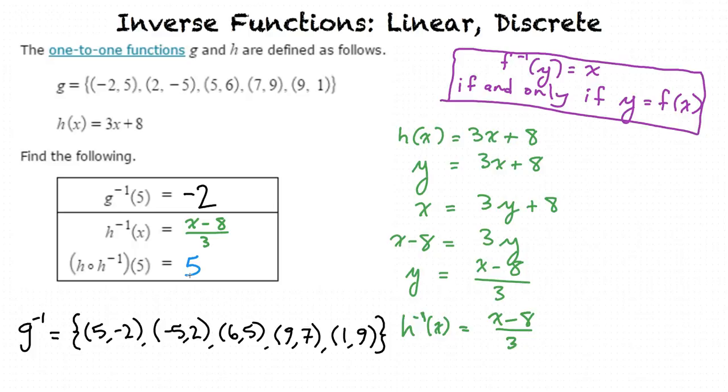We can confirm this by actually finding the value of h at h inverse of 5. We can rewrite the problem as h of h inverse of 5. That might make it more clear to see. We find h inverse of 5 first, and then we find h of that.